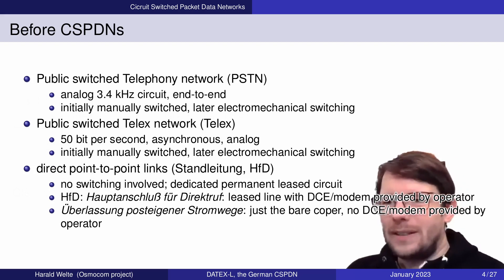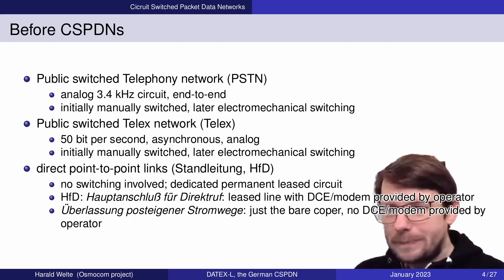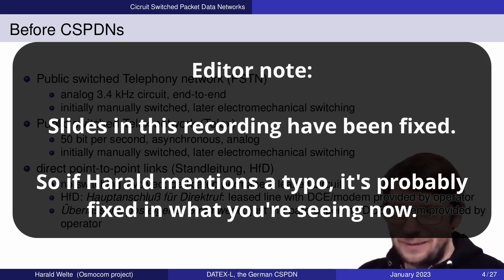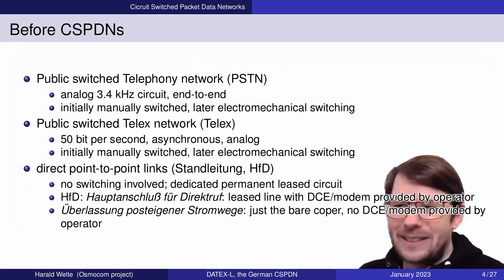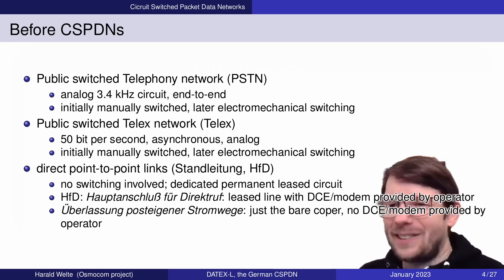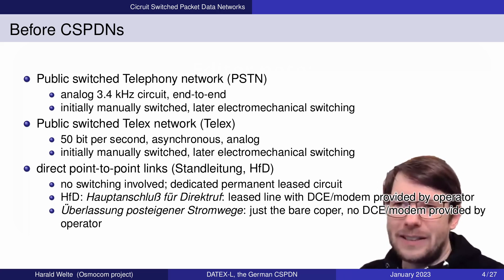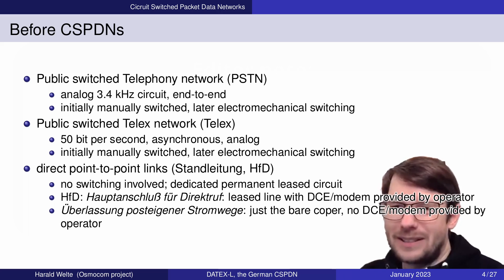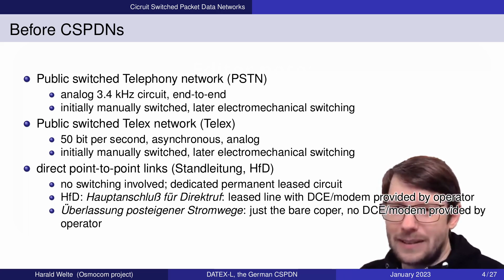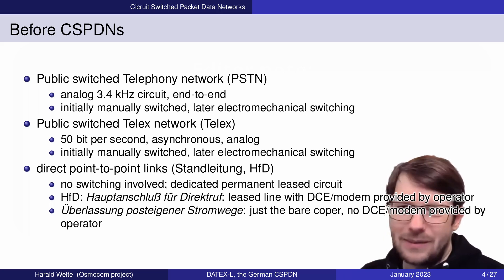So what did we have before CSPDNs came around? There was the public switched telephone network, the PSTN — an analog network with no bits per second. It was initially manually switched and later electromechanically switched. It's an analog circuit, so there's no digital part in the classic PSTN — analog signals up to 3.4 kilohertz could pass it — an end-to-end analog connection, possibly with amplifiers and modulators in between.